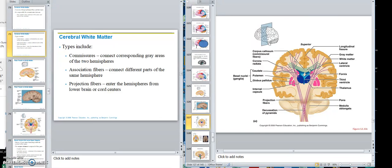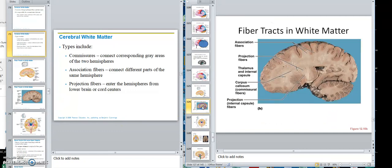Then projection fibers come down into the lower areas. So commissure, projection, and association. Commissure, projection, and association type.